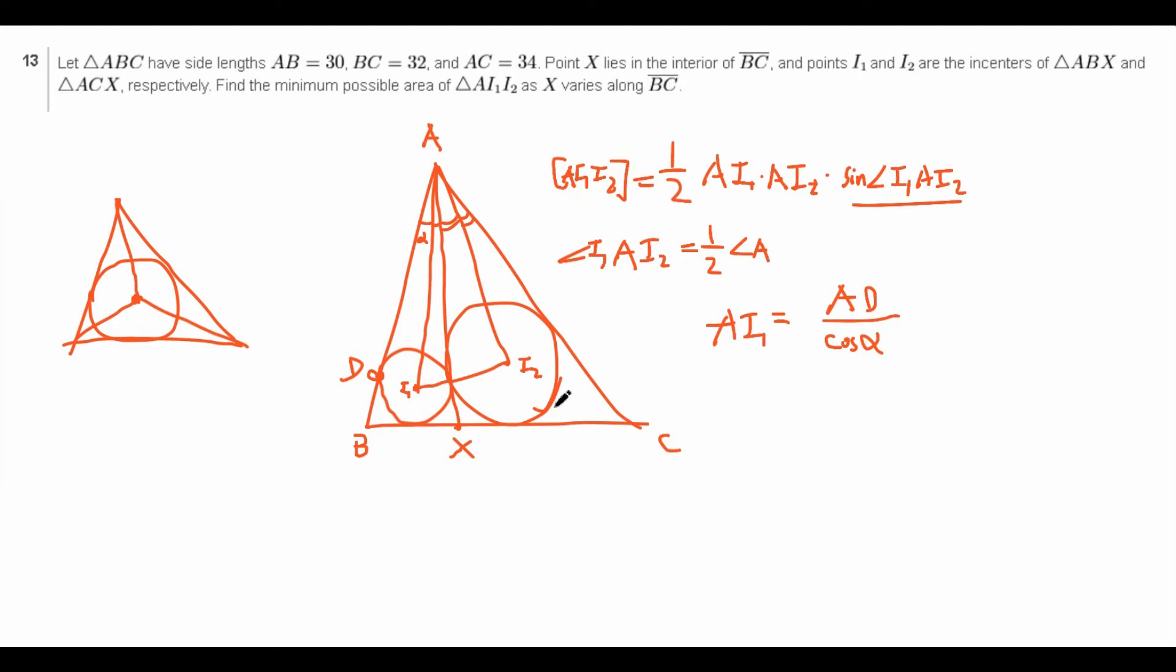And the thing with any sort of expression with BX, AX, and CX, is that we don't know what BX, AX, and CX are. We only know that we can relate them somehow. In particular, we could relate them with Stewart's theorem. Except for the expression for Stewart's theorem is pretty complicated. So, we probably don't want to go down this path of using lengths.